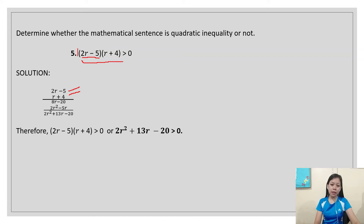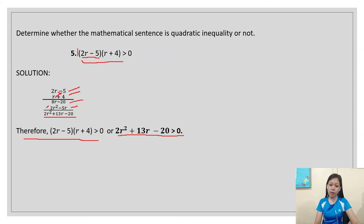So: 2r × r = 2r², 2r × 4 = 8r, -5 × r = -5r, and -5 × 4 = -20. Combining like terms, 8r - 5r = 3r... the answer is 2r² + 3r - 20. Wait — so the answer would be 2r² + 13r - 20. Therefore, (2r - 5)(r + 4) > 0 is equivalent to 2r² + 13r - 20 > 0.